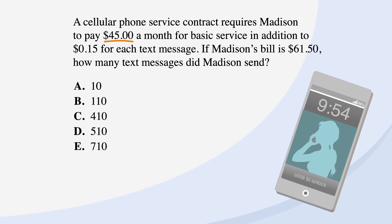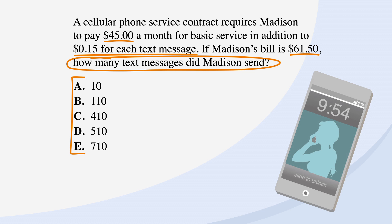First, we'll underline the facts. Then we'll circle the keywords: how many text messages did Madison send? And label the answer choices, which represent the number of texts Madison sent. This question has verbally given us a few equations and has asked us for the value of one of the variables in these equations, so we know we can back solve.